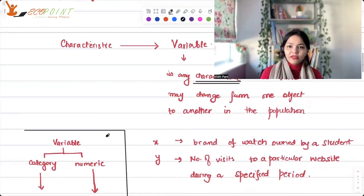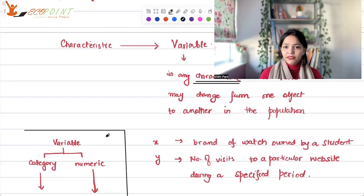Variables, generally we take the lowercase x, y, z, that's how we take it. Variable in the data is basically the characteristic. Suppose for the students only, I am also interested in the brand of watch that they own. That is one characteristic I am interested in, so that is one variable. It would vary from person to person. Y could be another variable, which could be the number of visits to a particular website during a specified time period.